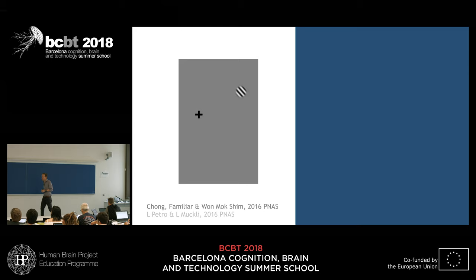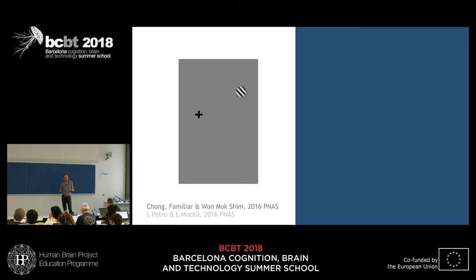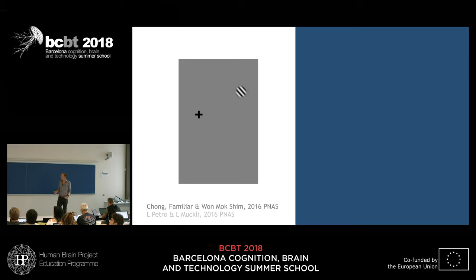Now let's look at brain imaging research that finds evidence for this. This is more or less a theoretical framework going back to Helmholtz, then David Mumford, and Rao and Ballard in the 90s who made computational models of this. The brain imaging and electrophysiology evidence has come out in the last 10 years, and we contributed some of that.